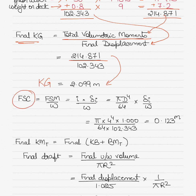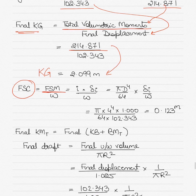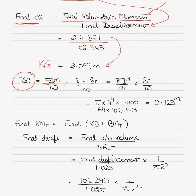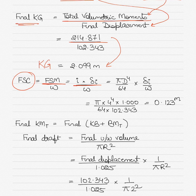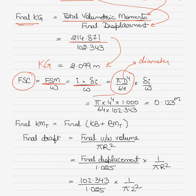The free surface correction is found by dividing the free surface moment by the displacement. If water is free to slosh, there will be a free surface effect. The free surface moment = moment of inertia × density of fresh water. Moment of inertia for a cylindrical shape is π·d⁴/64, where d = 4 meters. Dividing by the displacement gives a free surface correction of 0.123 meters.